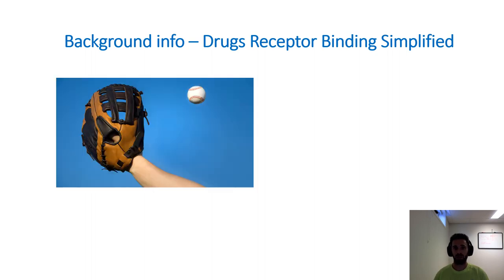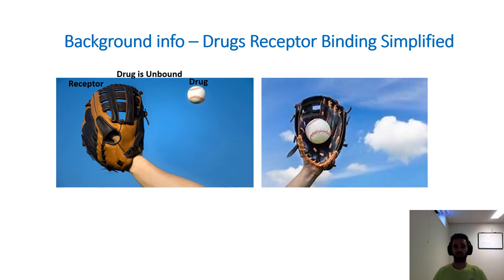I want to use a simple analogy to explain drugs and receptors with the following. Imagine if I have a baseball glove and a baseball. In this analogy, the receptor is going to be represented by a baseball glove and a drug is going to be represented by a baseball. In this state, the drug is unbound to the receptor, i.e. the baseball is not inside of the baseball glove. In order for a drug to have a pharmacological effect, the drug has to be bound to the receptor or the baseball has to be inside of the baseball glove. Without the baseball inside of the baseball glove, a pharmacological effect will not occur and an intoxication will not be produced.